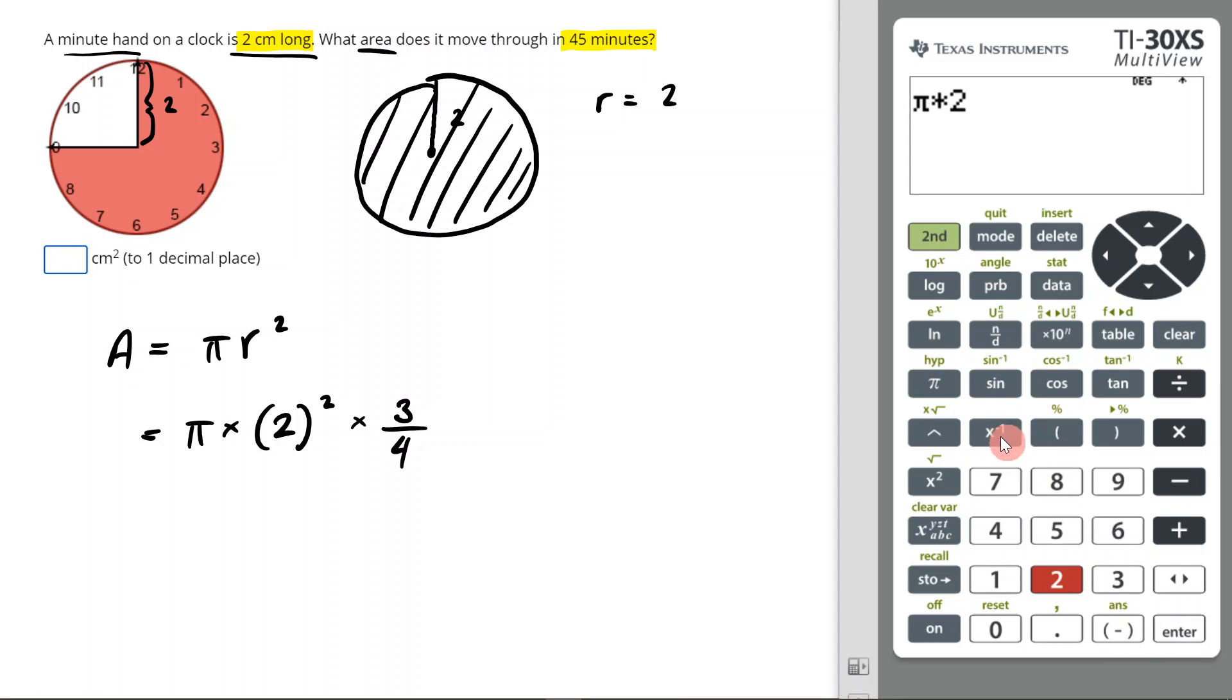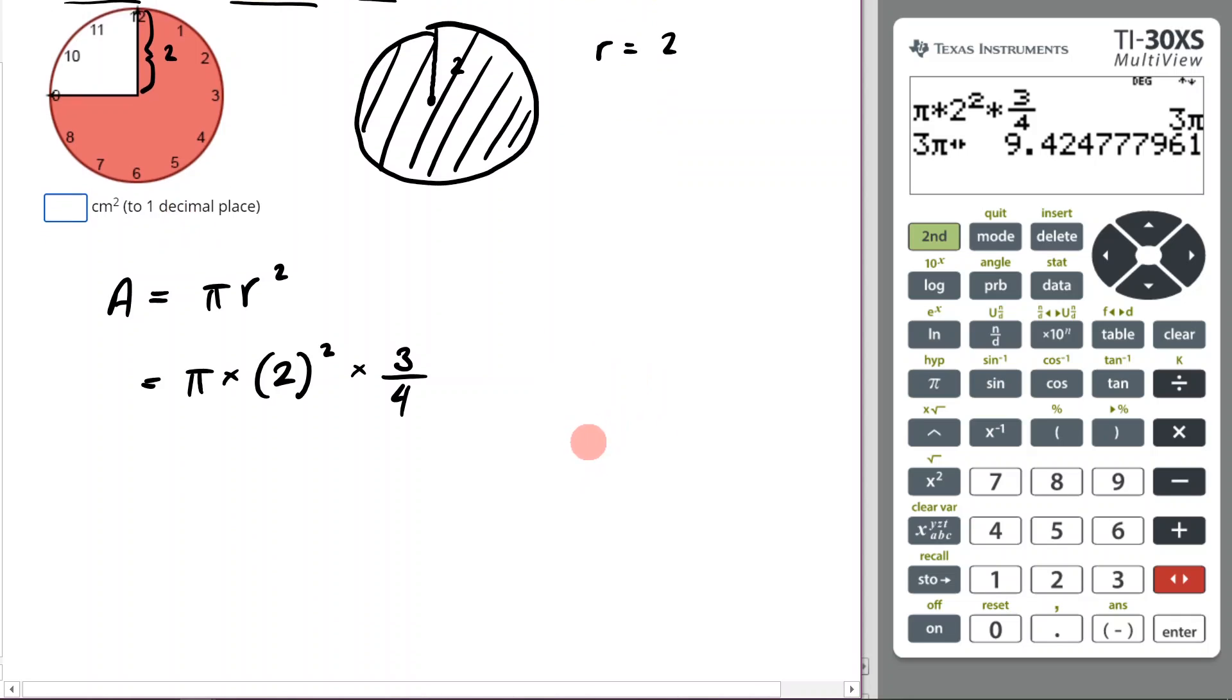times 2 squared, times 3/4, then enter. Now it's going to give us that, but then we have to hit that button here and we're going to get 9.42477961. Now we have to round to one decimal place, so that means